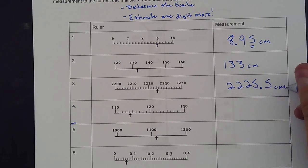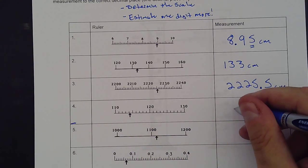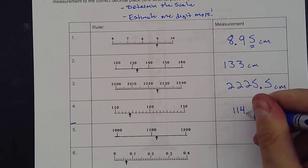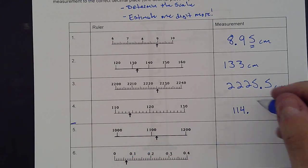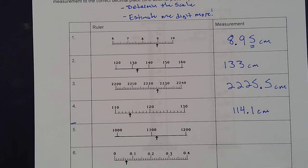We're going to attach those units. I didn't say centimeters or anything, but you can take a guess. Let's look at this one. 110, 120. These hash marks are going up by one. I can see that's going up to at least 114. I get to estimate one more digit. I'm going to say that's 114.1. That's pretty close to that other side.